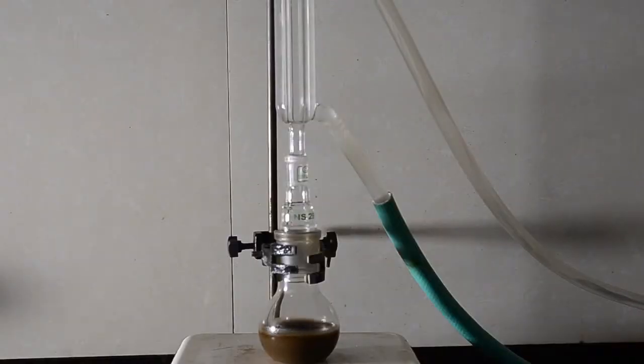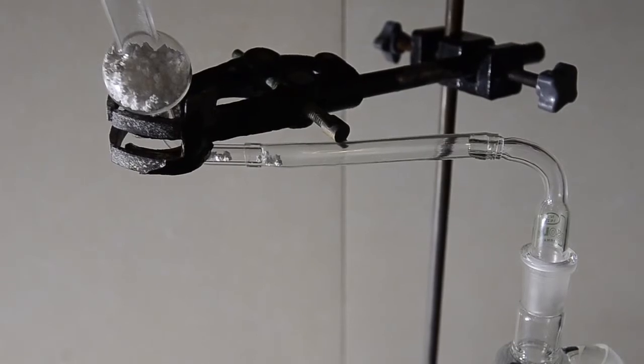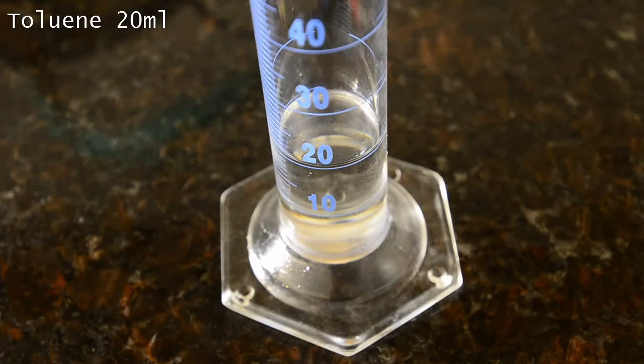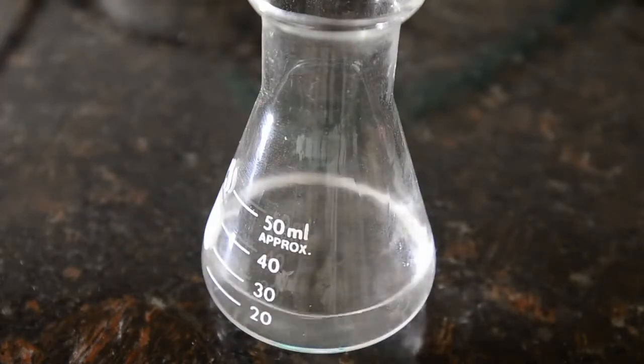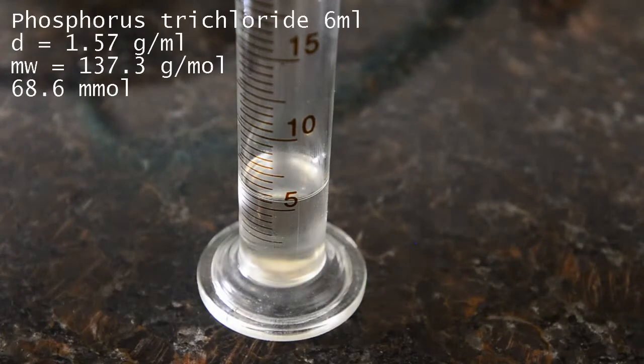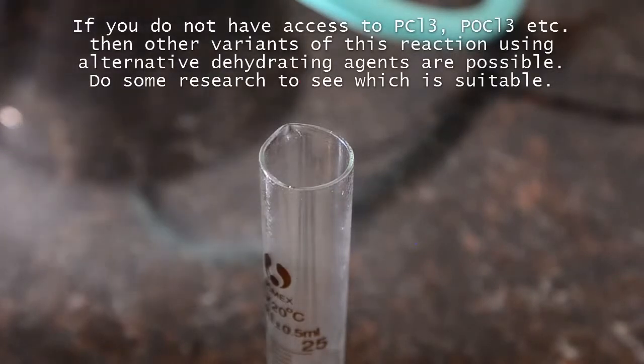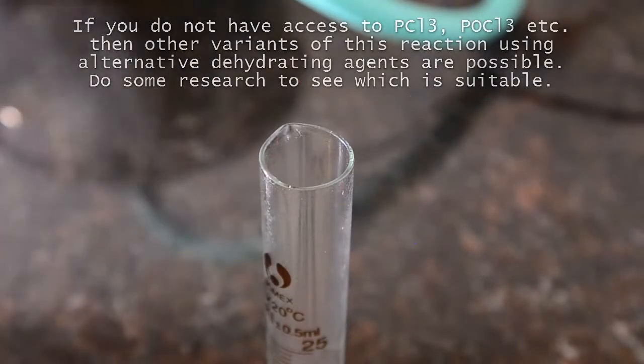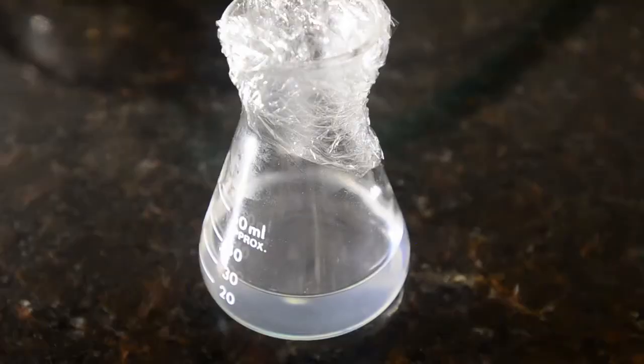Set the flask up with a condenser using ice cold water circulating. Set up a drying tube on the top of the condenser so that the contents are protected from atmospheric moisture. Now measure out 20 mls of dry toluene. Pour this into a small dry conical flask. And now measure out 6 mls of phosphorus trichloride. This will act as a dehydrating agent in the reaction and remove water as it is formed. You can also use phosphorus oxychloride and possibly pentachloride as well. Add this to the toluene in the flask in order to make a solution. Cover the beaker in wrap so as to protect from moisture and to avoid fumes of HCl gas.